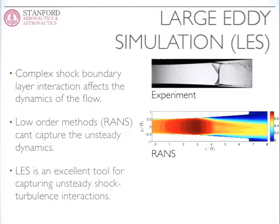One traditional approach is a RANS methodology — Reynolds-averaged Navier-Stokes equations, which are the governing equations but they're averaged. It's a much less expensive way; you can produce a solution quite rapidly and get main details of the flow: the shock, the separation, the asymmetry. You can use it in the design process. However, this particular RANS model does not predict at all the unsteadiness — it's a steady RANS calculation. So we want to turn to a more high-fidelity approach that captures more of the scales of motion.